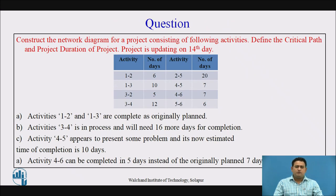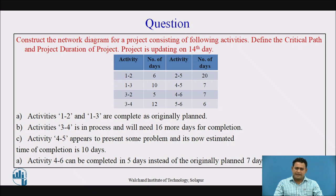Here is a question in which we are observing activities with their days. The table shows the activities, durations, and descriptions presenting the present conditions and data of all activities in the project. Activities 1-2 and 1-3 are completed as originally planned. Activity 3-4 is in progress and will need 6 more days for completion. Activity 4-5 appears to present some problems and its estimated time of completion is 10 days, while activity 4-6 can be completed in 5 days instead of the originally planned 7 days.